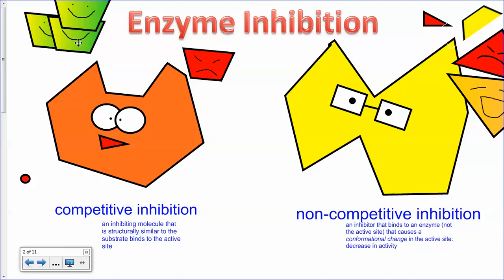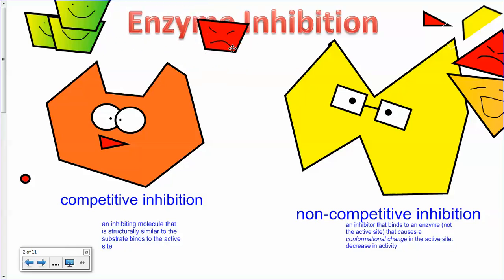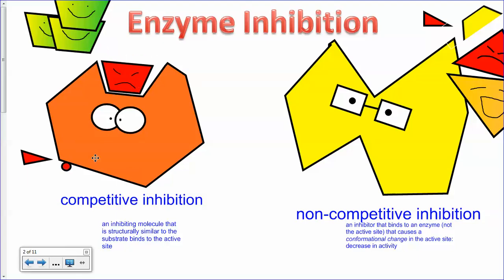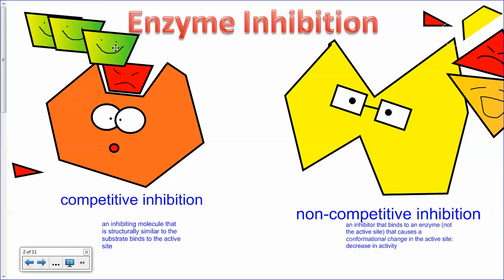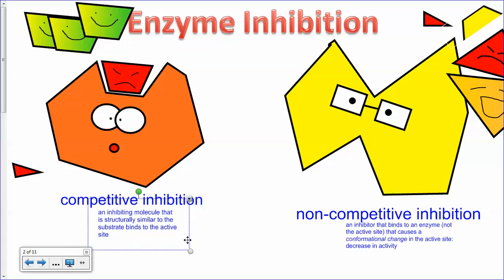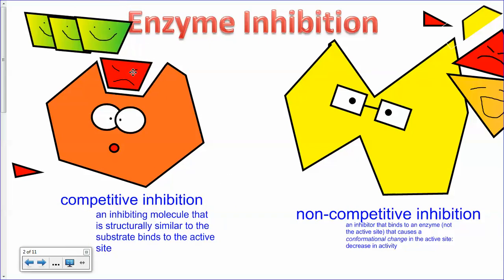So what's an inhibitor? An inhibitor is something that's going to prevent this enzyme from doing its job. In competitive inhibition, you have some kind of molecule that is very similar in shape to the substrate and it can actually bind to the same active site. When it binds to that active site, the normal substrate cannot actually bind and so you should expect the enzyme reaction to decrease. In competitive inhibition, an inhibiting molecule is structurally similar to the substrate, binding directly to the active site and causing this to not work out.